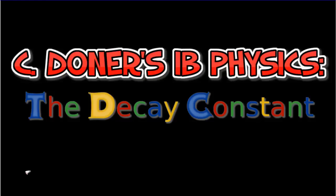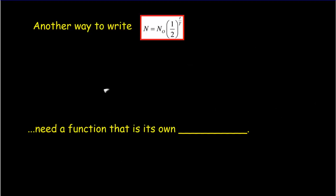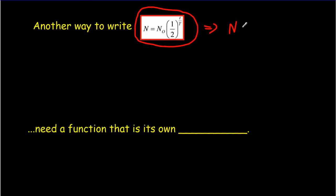We're going to take another look at the rate of radioactive decay, but this time we're going to look at it in terms of what's called the decay constant. In the last lesson, we learned about this expression. We're going to come up with a new expression today which models exactly the same thing: the number of radioactive particles equals the number you started with times e to the negative lambda t, where lambda is called the decay constant.